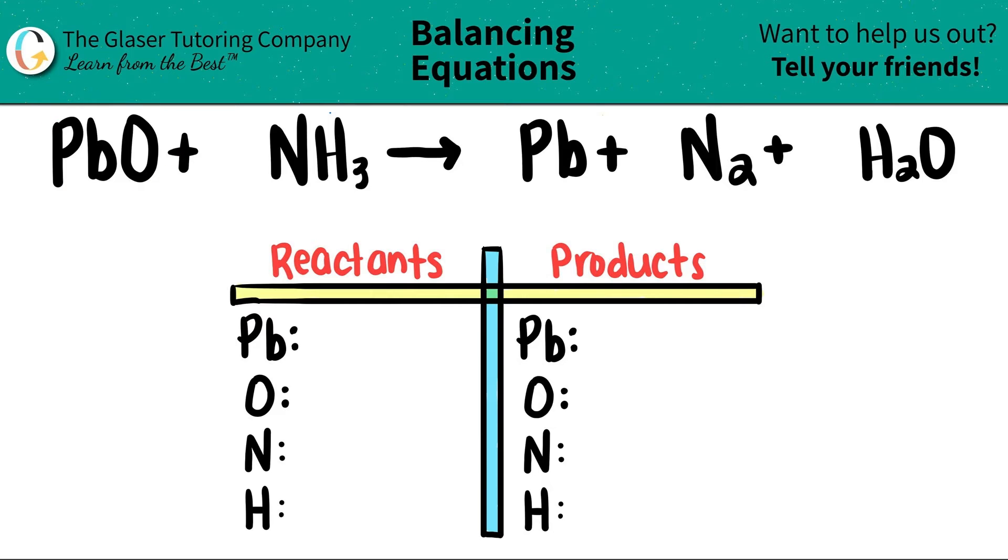Let's start with the left-hand side. For lead, which is Pb, I don't see any subscripts, which means that I only have one Pb, and the same for oxygen. There's one oxygen. Coming down to the nitrogen, it's the same exact idea. I only have one nitrogen, so I'm going to put a one here, but then for the hydrogen, I see that there's a three, so I have three total hydrogens.